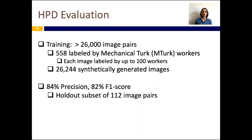We designed the human perception discriminator to be a Siamese network that takes as input two images and extracts image features using certain layers from the pre-trained Inception network. We then feed these features to several fully connected layers that we train using contrastive loss and cross-entropy loss to accurately predict if the input images are perceived as identical or different by the average human. We first trained and evaluated HPD using more than 26,000 image pairs, of which 558 were labeled each by up to 100 Amazon Mechanical Turk workers, and the rest were synthetically generated to be obviously different or same. HPD achieved a precision score of 84% and a recall score of 82%.